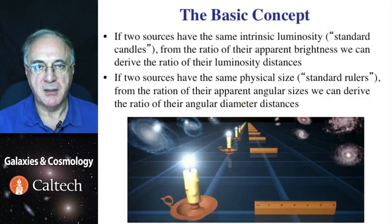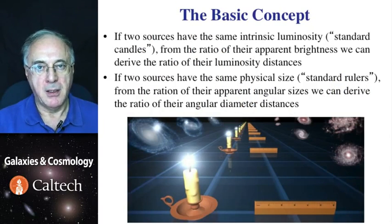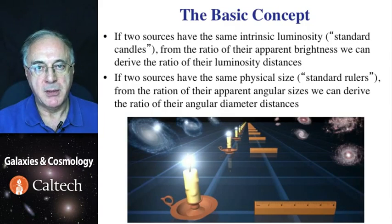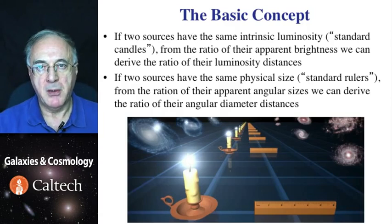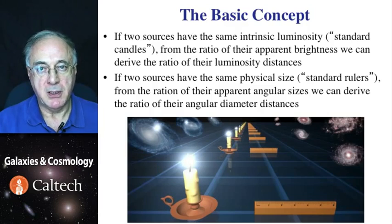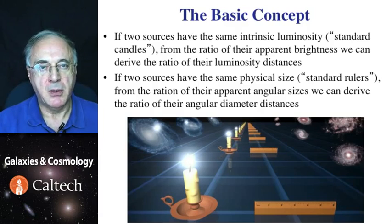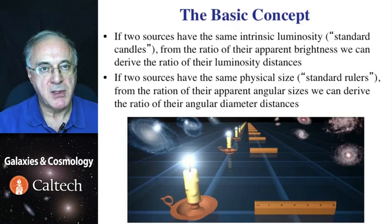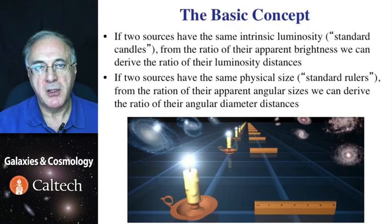We keep using the term standard candle, and this is where it comes from. There used to be such a thing as a standard candle, and such standard candles ostensibly had the same brightness. Now a supernova is a lot brighter than a candle, but the same concept applies. So if somehow a supernova, or something else, has a constant luminosity, if we put it at different distances from us, its brightness will decline according to the inverse square law, or rather the relativistic version thereof. So if we can measure relative brightness of the standard candle at two different distances, we can derive what's the ratio of their luminosity distances.